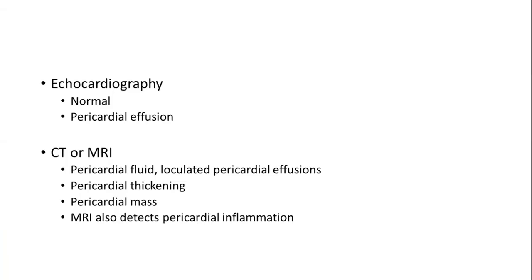The next investigation is echocardiography. Echo can be normal sometimes, however in some cases you can find coexisting pericardial effusion, as almost every case of acute pericarditis will have some amount of effusion. If there is any diagnostic confusion, we can proceed to CT and MRI, which help identify pericardial fluid, loculated effusions, pericardial thickening, and any pericardial mass. MRI is particularly useful in acute pericarditis as it can detect pericardial inflammation directly.